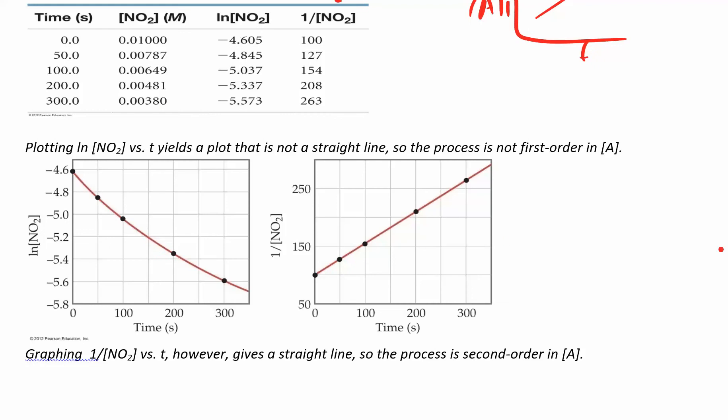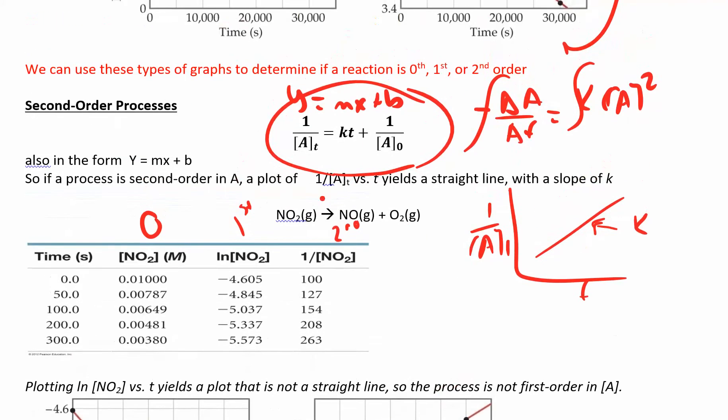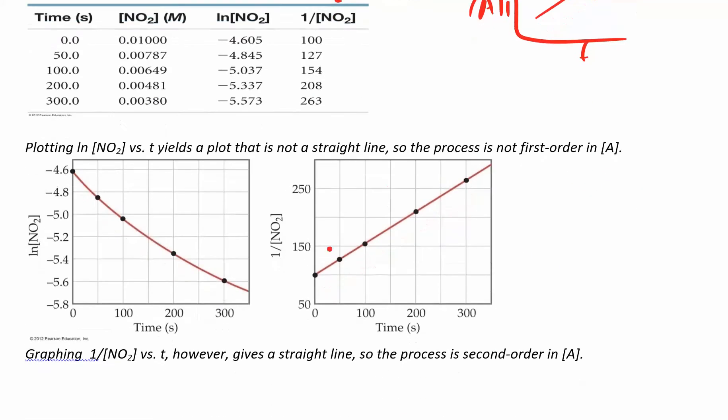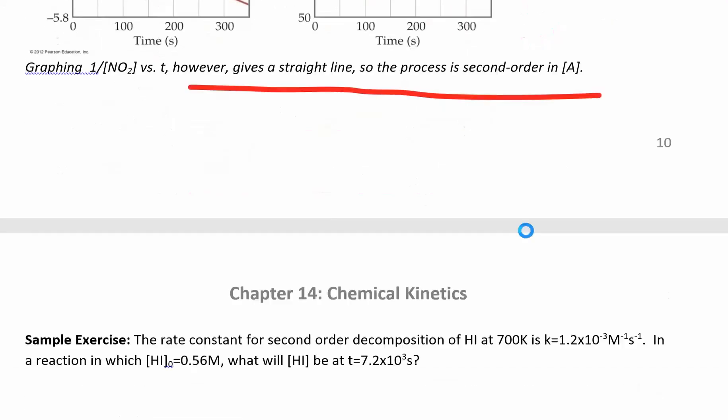So if I just kind of gave you these graphs, you can see natural log versus time does not give you a straight line. So this cannot be first order. This reaction, this is the reaction that we're talking about. But when I plot one over concentration versus time, I get a straight line. This means that this is a second order process. So only one of those graphs will give you a straight line.